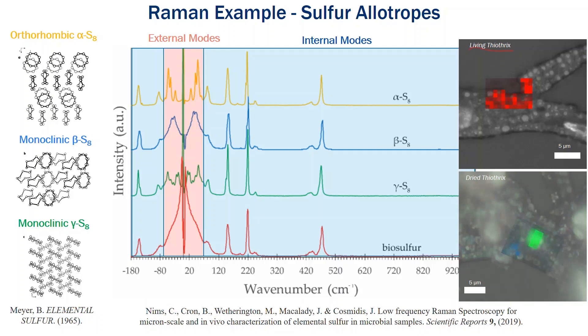In the living thiothrix example, which is actually in an aqueous solution — generally not much of an issue in Raman spectra, as we can scan materials in an aqueous solution — we identify that the sulfur present is biosulfur or liquid sulfur. However, once we dry that specimen out, we identify that the crystal structure has changed and there is actually quite significant heterogeneity present within the sample, showing both gamma S8 and beta S8 within a small scanned region.